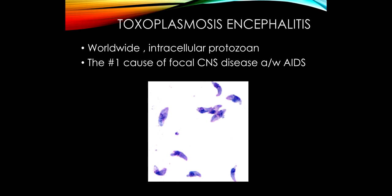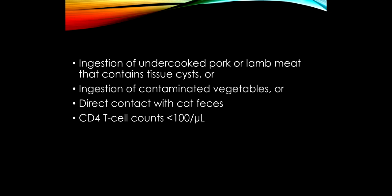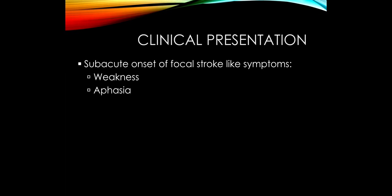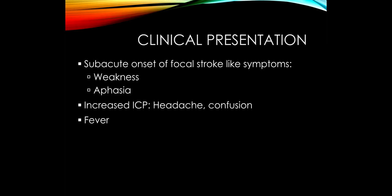Toxoplasmosis is very common — the number one cause of focal central nervous system disease in patients with AIDS. It's acquired through ingestion of undercooked pork or contaminated vegetables, or direct contact with cat feces. Symptoms of toxoplasmosis encephalitis appear when the CD4 count gets below 100. It presents in a usually quite dramatic manner with subacute stroke-like symptoms — hemiplegia or aphasia. There is swelling in the brain related to this infectious process, so there's increased intracranial pressure, causing headache and confusion.